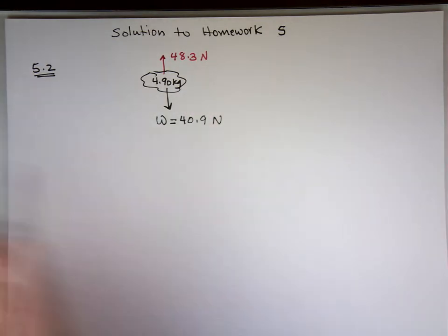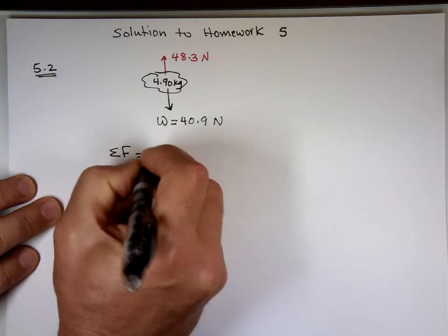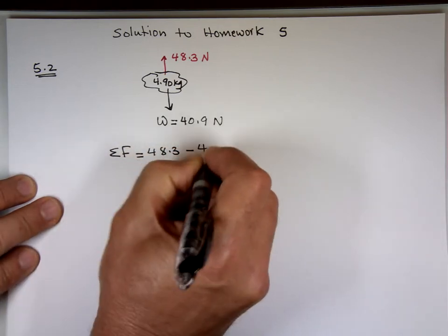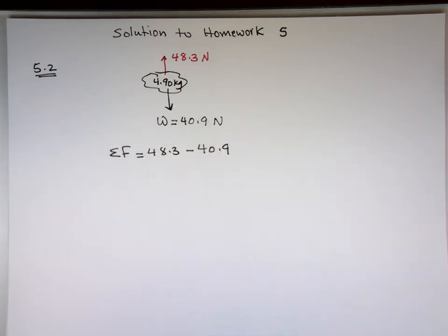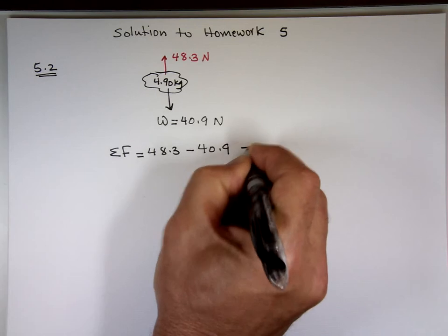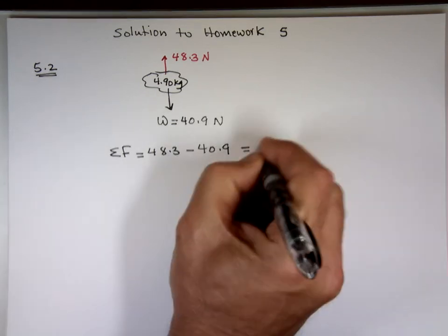So the net force here will be 48.3 minus the 40.9. And it will be pointing upward. Notice that's a positive value. And what is that number? 7.4.